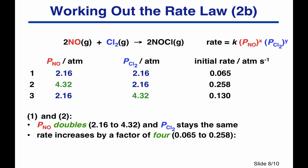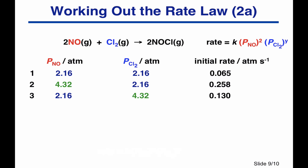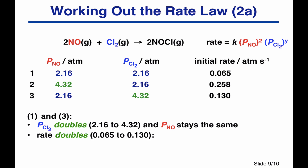Between experiments one and two, the partial pressure of NO was doubled while Cl₂ stayed the same. The rate went up by a factor of 4 — from 0.065 to 0.258 — when all we did was double the NO concentration. Doubling NO and getting a rate increase of 4 means a second order reaction in NO. So the rate is proportional to the square of the NO partial pressure. Using experiments one and three, doubling the Cl₂ partial pressure while keeping NO the same caused the rate to double from 0.065 to 0.13, giving a first order reaction in Cl₂.